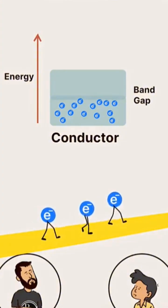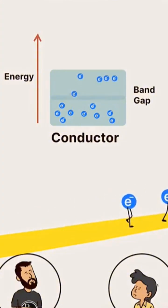In a conductor, there is essentially no band gap. Therefore, electrons don't need to jump to a higher level. They are free to move.